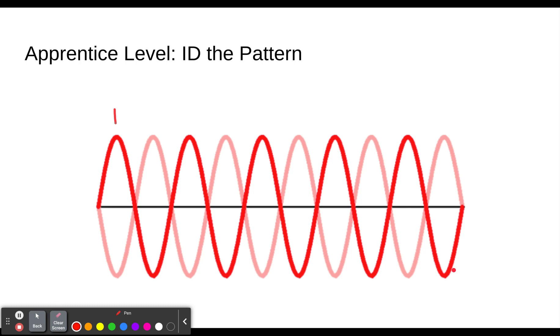So we just count the anti-nodes. Here's one anti-node, it goes up and down here. Two anti-nodes, three anti-nodes, four anti-nodes, five anti-nodes, six anti-nodes, seven anti-nodes, eight anti-nodes, nine anti-nodes, ten anti-nodes. That means this is the tenth harmonic. So if the question asks you what's the tenth harmonic, you'd choose this picture. If it says the third harmonic, you'd look for one that has just three anti-nodes. There you go. Apprentice level accomplished.